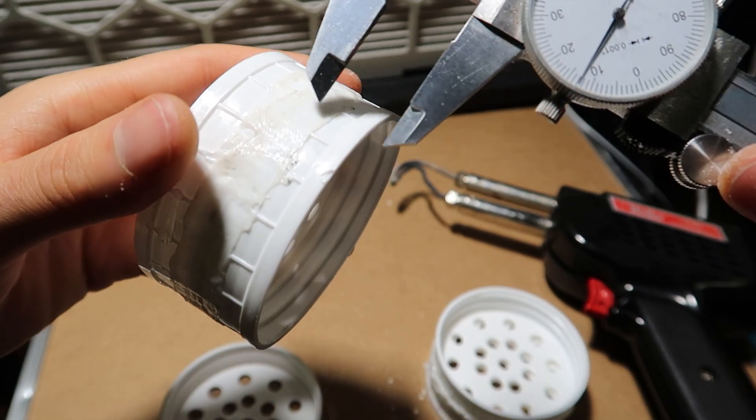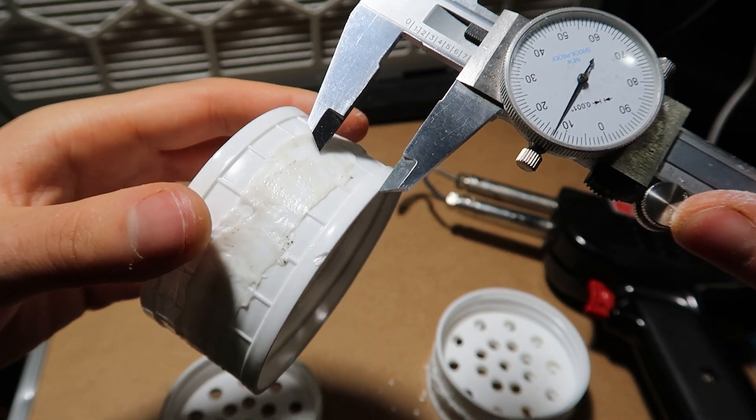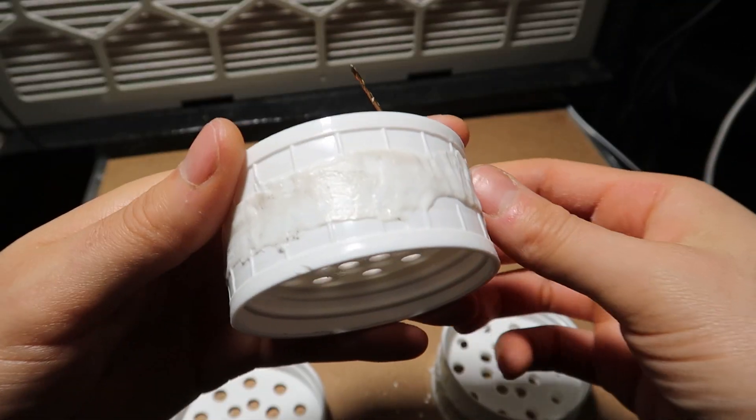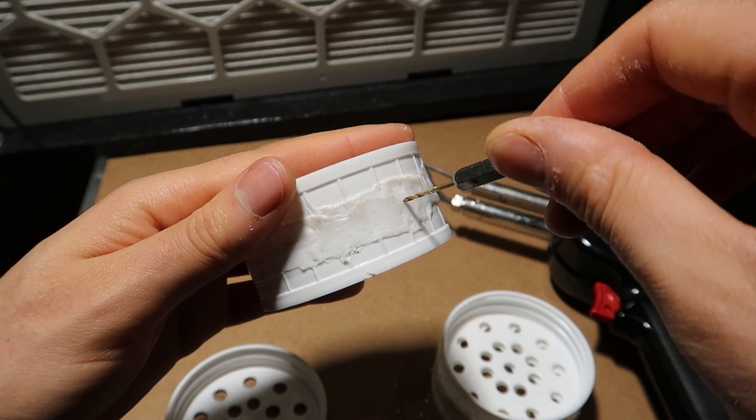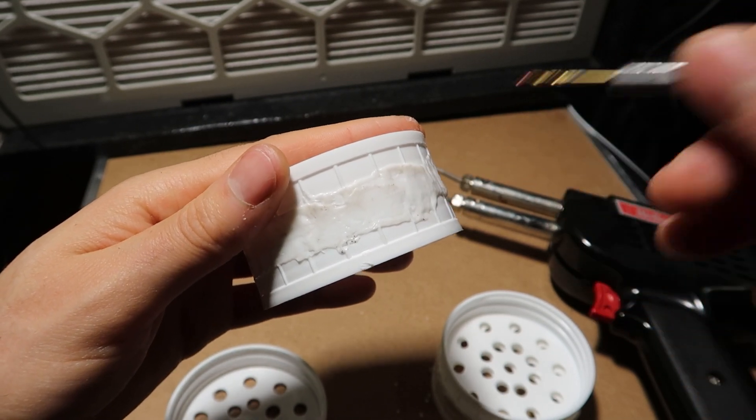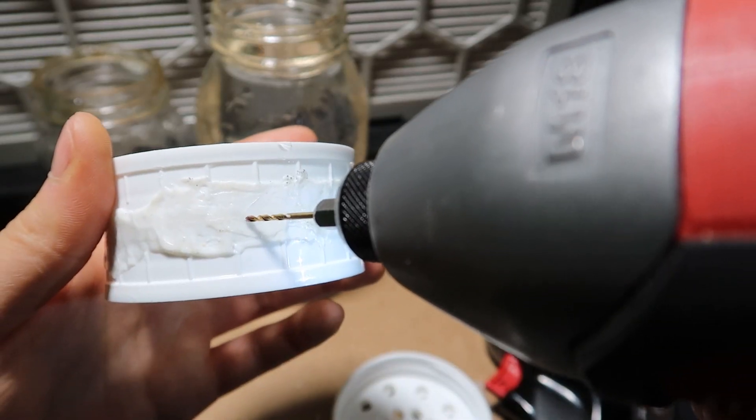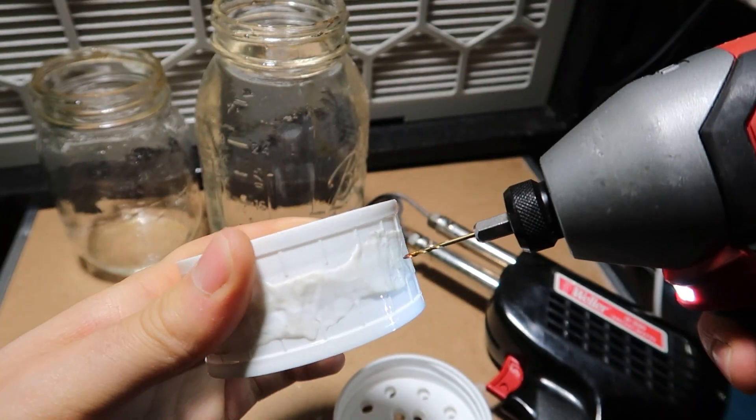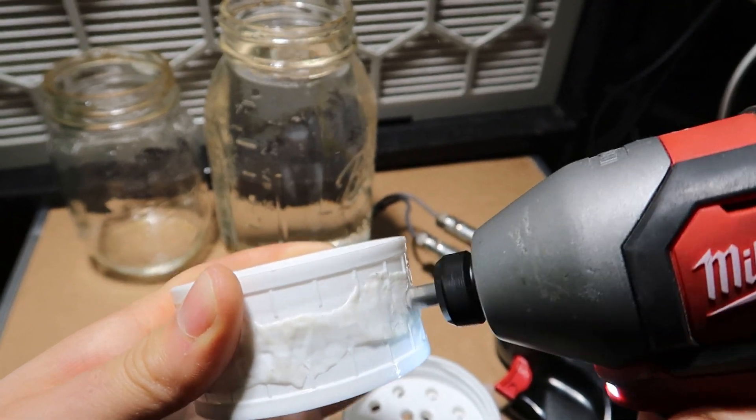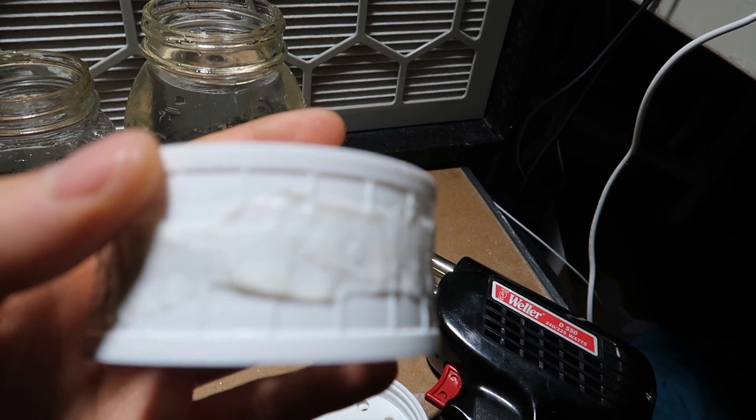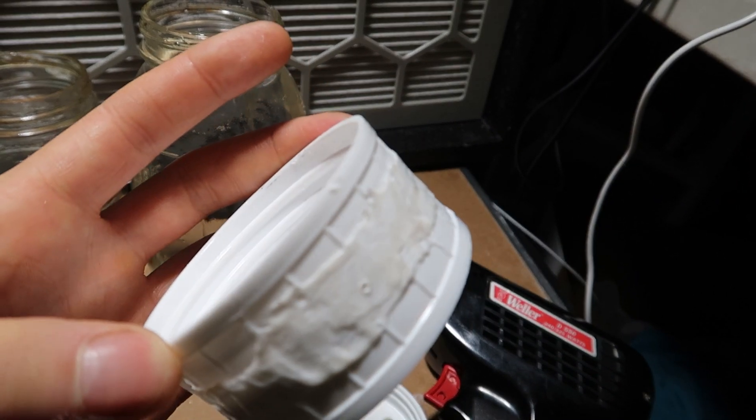Then grab our dial caliper, measure just a singular lid and then mark the center. We're going to grab our drill or a center punch and just mark where we want to drill. Then we're going to grab our drill and drill it out. Grab our filter patch, slap it on.